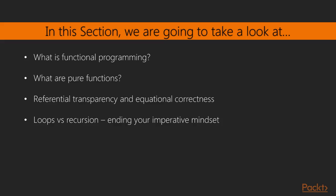In this section, we're going to define concretely what functional programming is. We're going to learn that it's really based on this pillar called the pure function, which ties into the referential transparency and correctness that we talked about in Section 2. And then finally, towards the end, we'll compare and contrast the idea of using loops versus recursion, and hopefully in order to get you to end your imperative mindset.